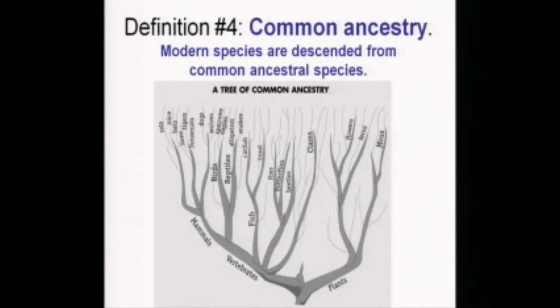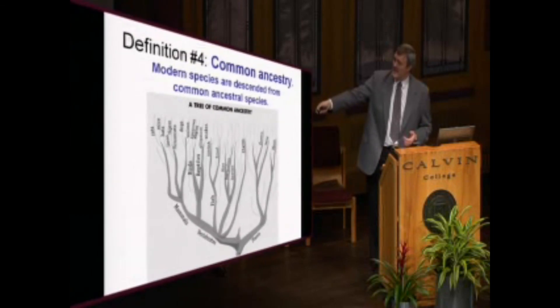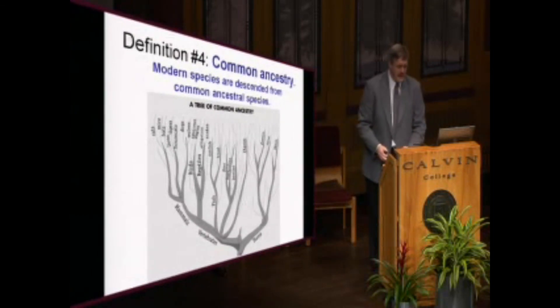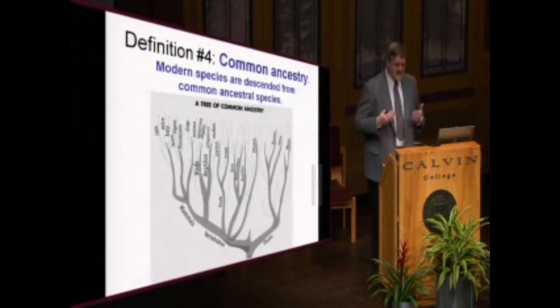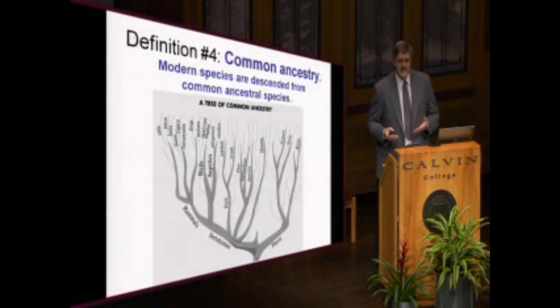Common ancestry refers to the idea that all species are linked into a kind of family tree. Modern dogs and coyotes and wolves are all descended from a common ancestral wolf-like species that no longer exists. Similarly, all dogs and cats and other mammals are descended from a common ancestor even longer ago. Common ancestry fits the pattern we see in the fossil record, but it doesn't tell us the mechanism of how species change and split over time.